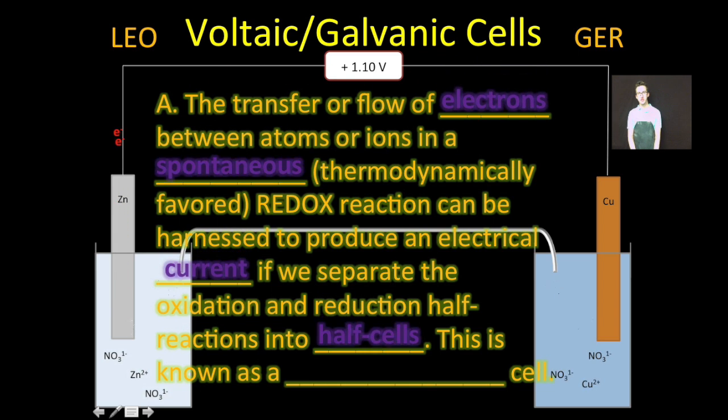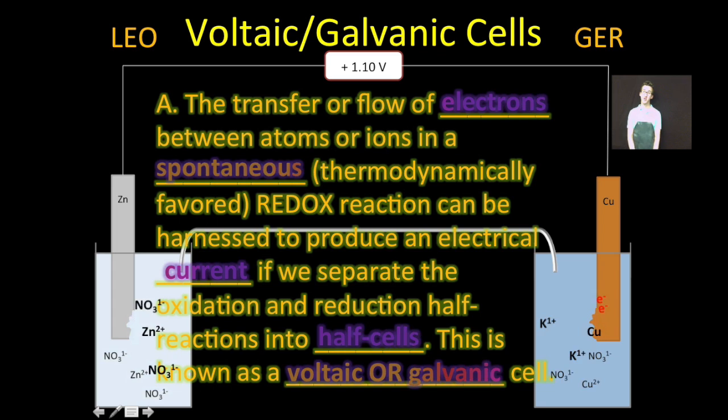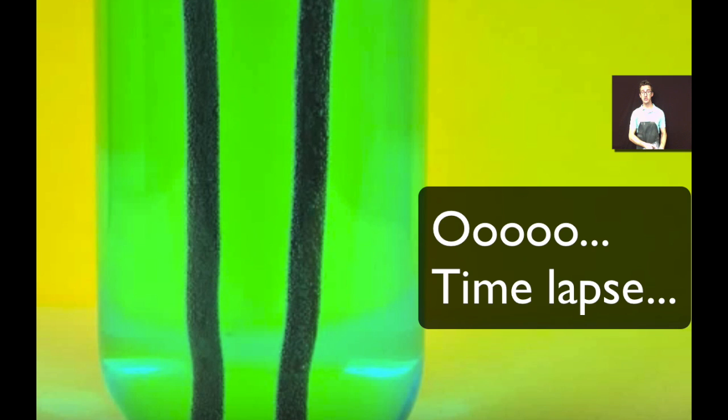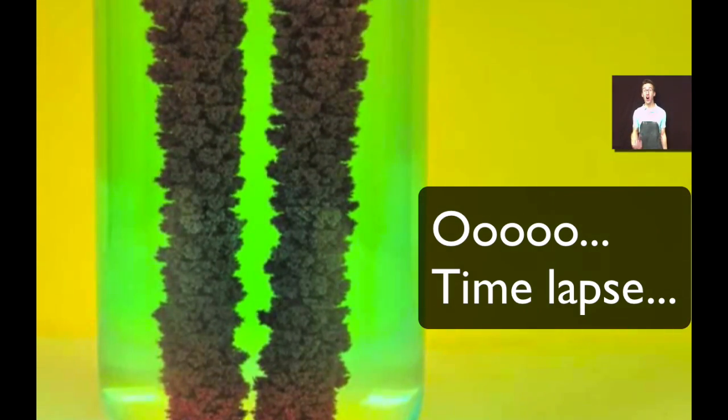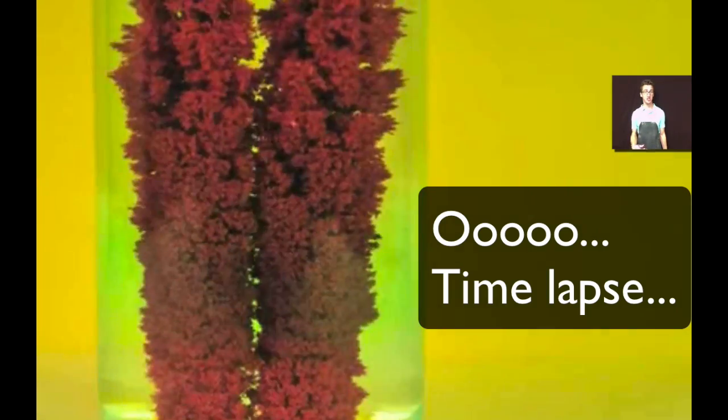First thing you need to know is that the transfer or flow of electrons between atoms or ions in a spontaneous redox reaction can be harnessed to produce an electrical current if we separate the oxidation and reduction half reactions into half cells. When we do that, we create what's called a voltaic, also known as galvanic, cell. Throughout this video, you're going to see in the background a voltaic cell that I have created between zinc and copper and solutions of those metal ions. If I place some zinc into some copper nitrate solution directly, we'll get the redox reaction to happen, but there's no way for me to harness those electrons as they're transferred from the zinc to the copper.